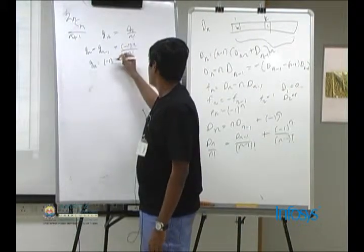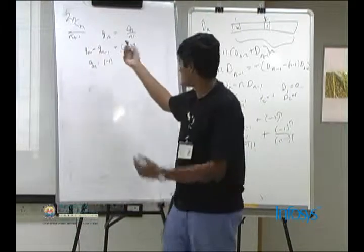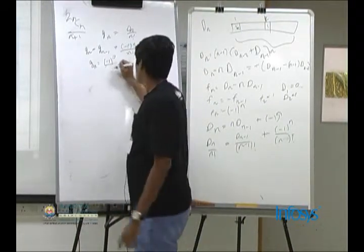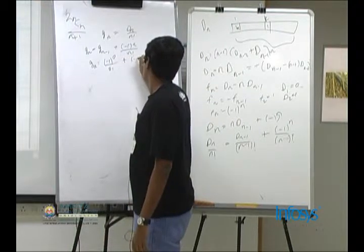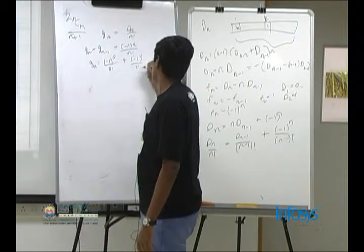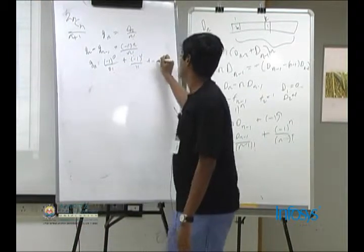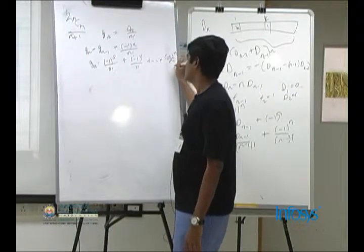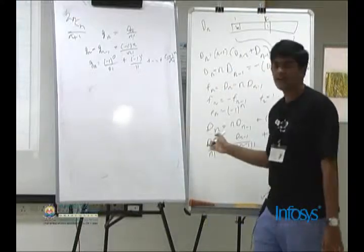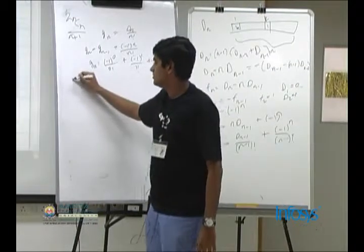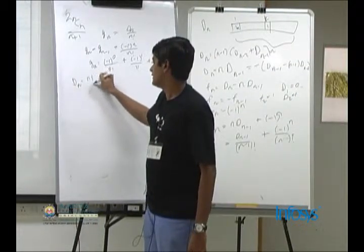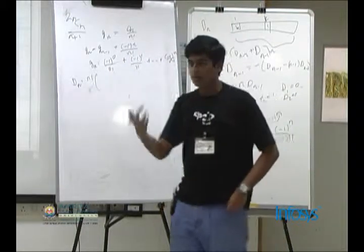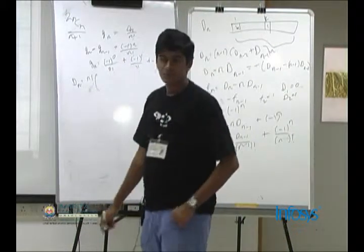Dividing d(n) = n*d(n-1) + (-1)^n by n!, we get d(n)/n! = d(n-1)/(n-1)! + (-1)^n / n!. Let g(n) = d(n)/n!, so g(n) = g(n-1) + (-1)^n / n!. Expanding: g(n) = (-1)^0/0! + (-1)^1/1! + ... + (-1)^n/n!. Therefore d(n) = n! * sum_{i=0}^{n} (-1)^i / i!.